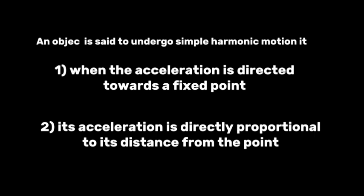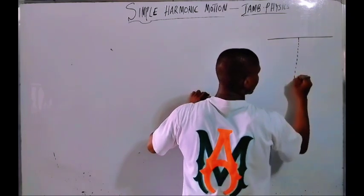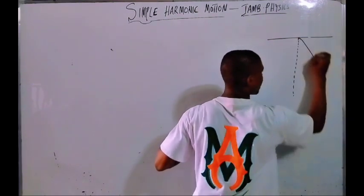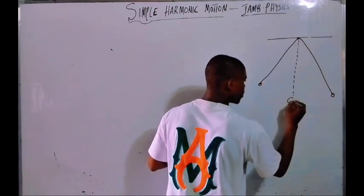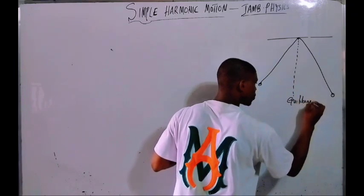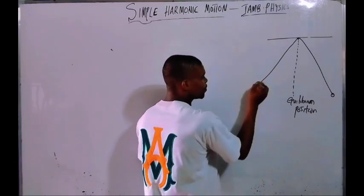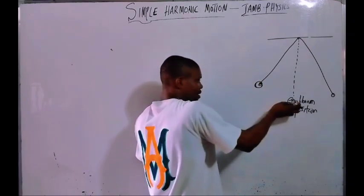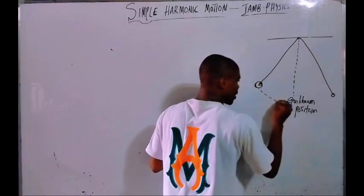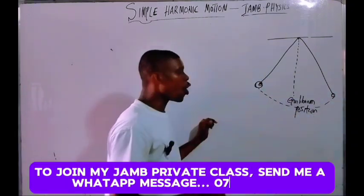Now let me explain. Here we have the equilibrium points — this one here and this one here. We call this the equilibrium position. So an object undergoes simple harmonic motion when the acceleration is directed towards the fixed point or the equilibrium position. You can see it is all directed towards the equilibrium position.